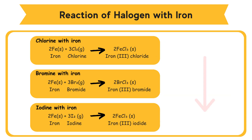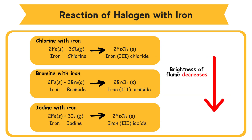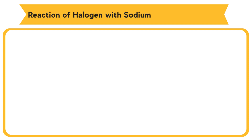The brightness of the flame decreases from chlorine to bromine to iodine. Hence, the reactivity of halogens when reacting with iron decreases from chlorine to bromine to iodine.